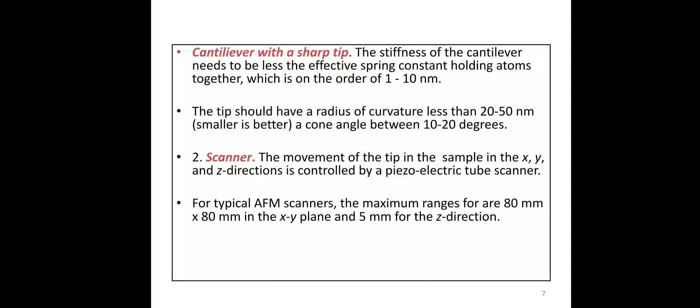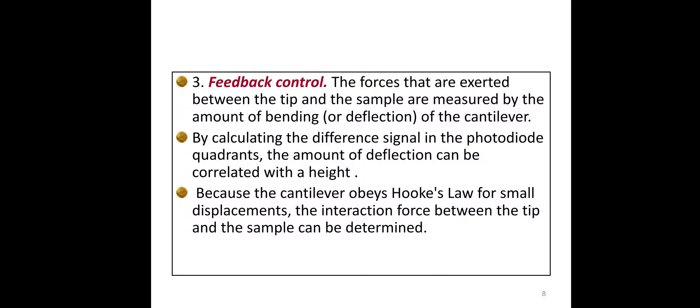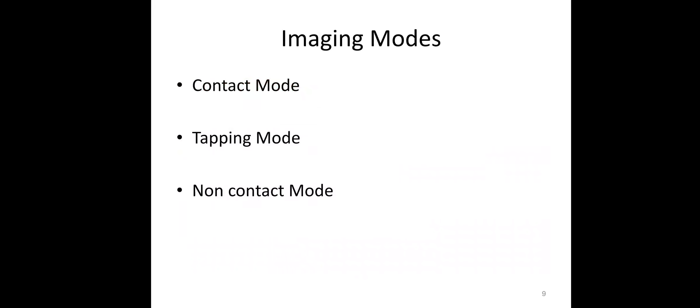For typical AFM scanners, the maximum range is 80 mm x 80 mm in the XY plane and 5 mm for the Z direction. The feedback control measures the forces exerted between the tip and sample by the amount of bending of the cantilever. By calculating the signal from the quadrant photo diode, the deflection is correlated with height. Due to Hooke's law, the interaction between tip and sample can be determined.